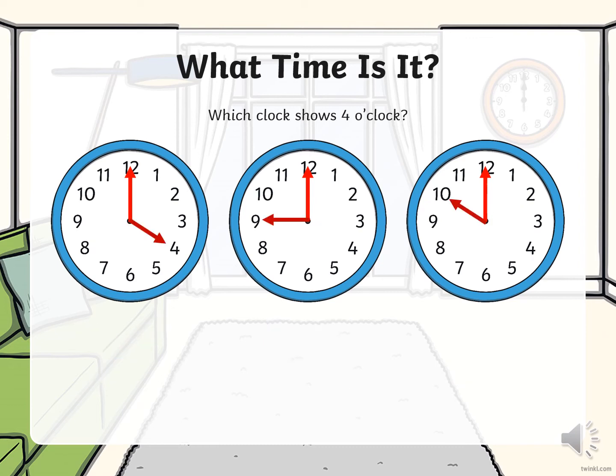Let's go again. What time is it? Which clock shows 4 o'clock? If we look at all three of these clocks, we see that the long arms are pointing to the 12 to say it is o'clock. So we only have to find the correct hour hand pointing to 4 to say that it is 4 o'clock. Can you spot the correct clock? Yes, it's the first one. Well done.